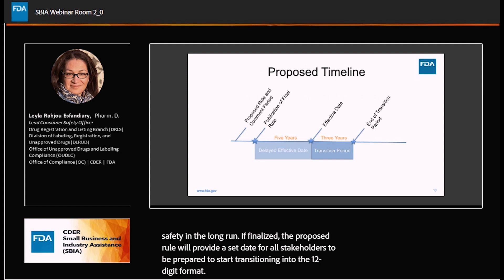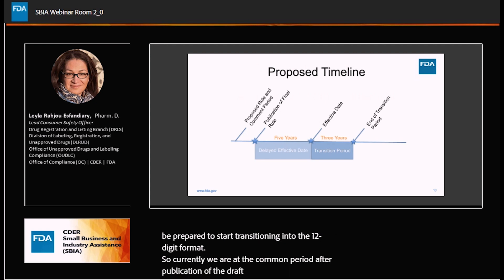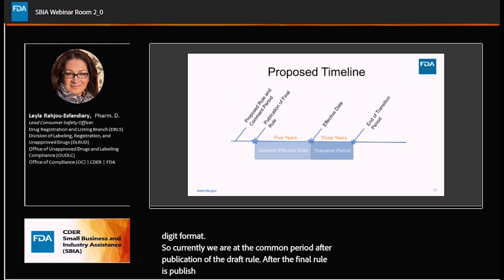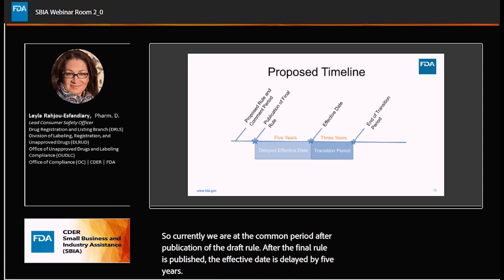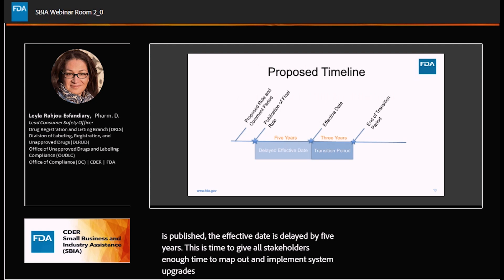Currently, we are at the comment period after publication of the draft rule. After the final rule is published, the effective date is delayed by five years. This is planned to give all stakeholders enough time to map out and implement system upgrades and roll out schedules to allow for the new 12-digit NDC format.